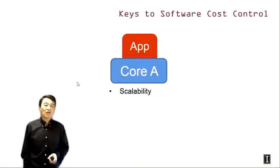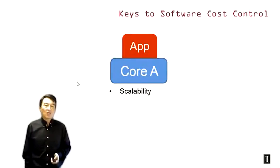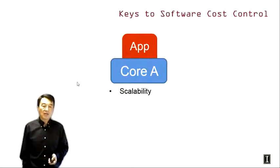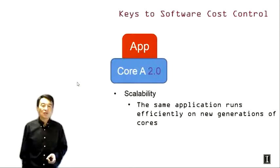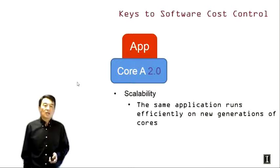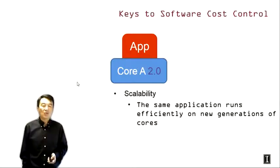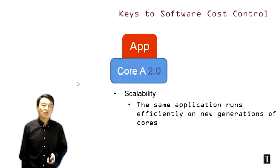The first aspect of software cost control is scalability. If we develop an application to run well on core A, we'd like to ensure that the same application, without significant redevelopment, can run efficiently on the next version of core A — say core A 2.0. This allows us to use the same application when a new generation of hardware is introduced, reducing redevelopment cost.